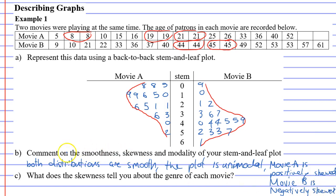Last question. Question C says, what does the skewness tell you about the genre of each movie? When you think about it, movie A, which is positively skewed, has younger patrons, because when it's positive you get more of the numbers that are lower. So this is probably a cartoon or a kid's movie. Movie A is probably a kid's movie.